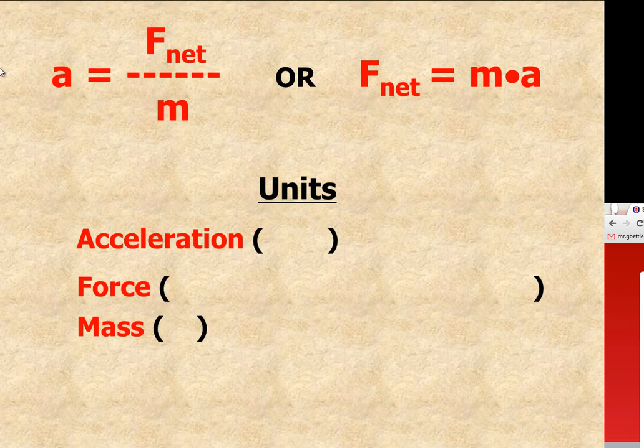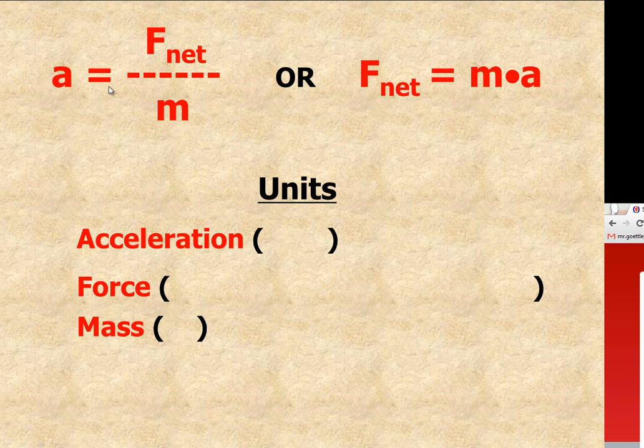The equation for Newton's second law can be written in actually three forms. Here I'm showing you the two most common forms of writing it. a equals F net over mass or cross multiply, you get F net equals mass times acceleration.